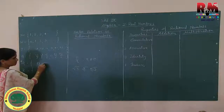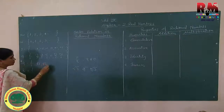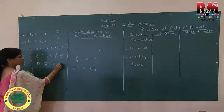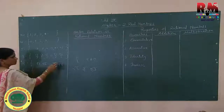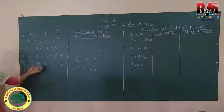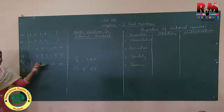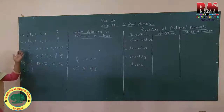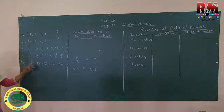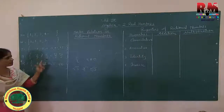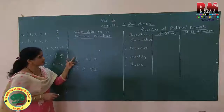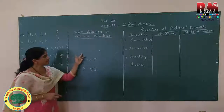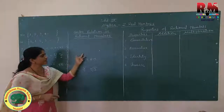In the previous lesson we saw examples: root 3, root 2, minus root 2, root 5 — these are not in any particular order. These are the kinds of numbers called irrational numbers. The definition of rational numbers: numbers in the form of P upon Q where Q must not equal to 0 are called rational numbers.